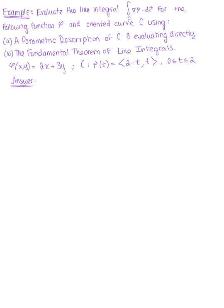Here we are given a conservative vector field and asked to evaluate the line integral using two different forms. In part a, we want to use a parametric description of c and evaluate the result directly. In part b, we want to use the fundamental theorem of line integrals. We are given the potential function phi of xy equal to 2x plus 3y, and the parametric curve c defined by vector r of t with components 2 minus t, t, for t in [0, 2].